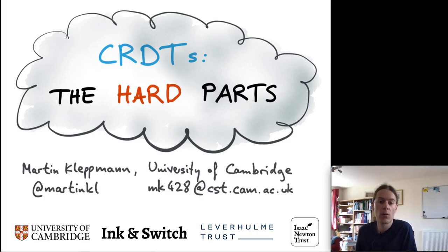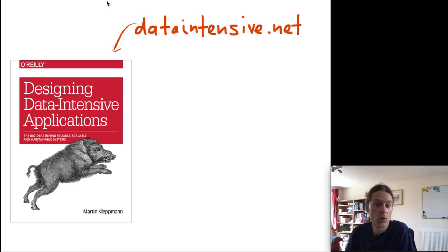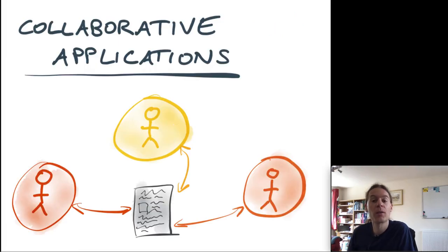You might know me from this book, which I wrote a couple of years ago. It's called Designing Data-Intensive Applications and it's a broad overview of the architecture of data systems and how to choose your database for your particular application. But that's not what we're talking about today — today we're talking about collaboration software.